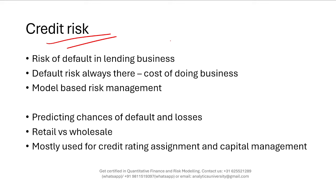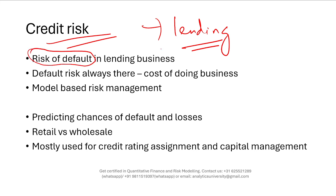There are a lot of jobs available in credit risk modeling — more vacancies than in other risk modeling areas. The biggest reason is that it's related to lending, which is the biggest business for banks. The biggest lending risk is default risk, which is why credit risk is so popular. Credit risk is about the risk of default in a business — you lend money to a customer and the customer may default on the loan. You model the chances of default and the loss you would incur if a client defaults.